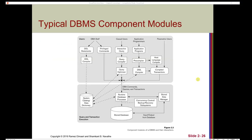Here is a visual representation of how different types of users communicate with the stored database. On the lower level are the components of the database and the systems used to communicate with it. Database administrative staff can use both the DDL and privileged commands to add tables via the system catalog and data dictionary. Casual users pull information using interactive queries. Application programmers use the DML through applications. Parametric users — those who only need occasional database access — can do so using a collection of compiled transactions.